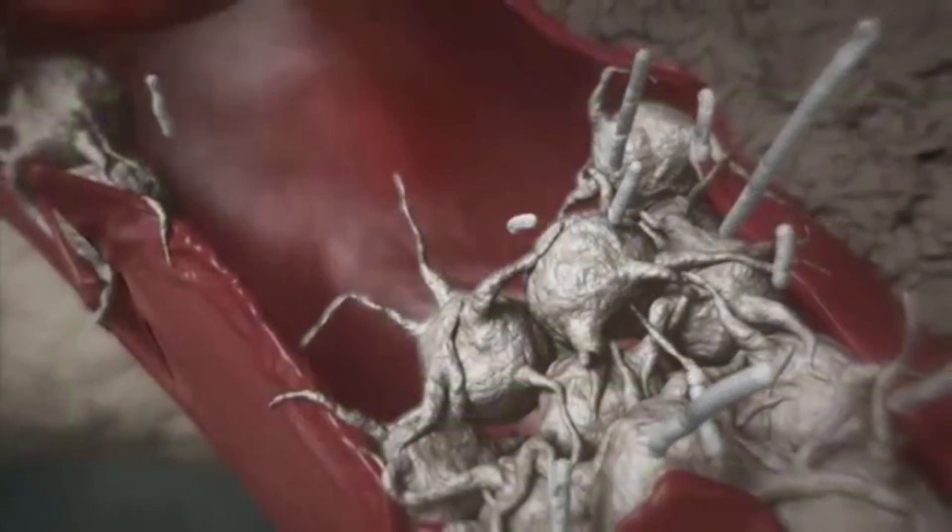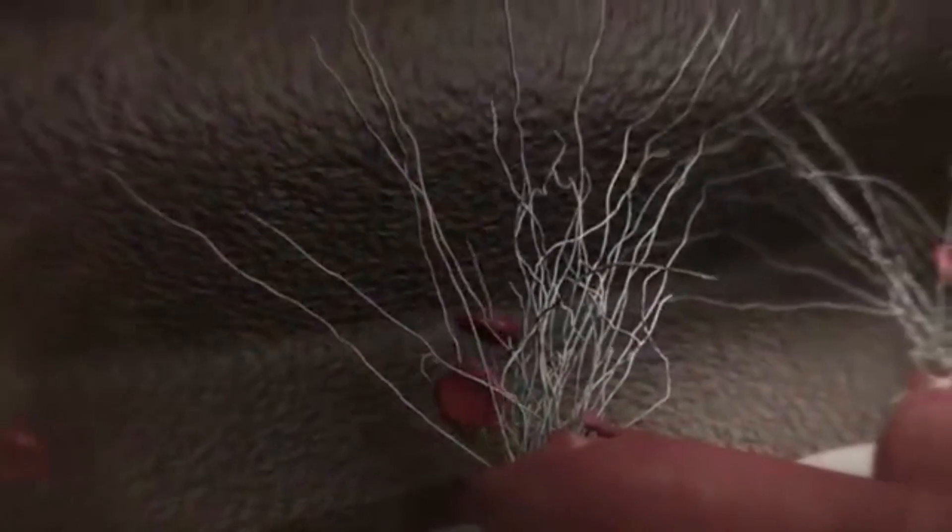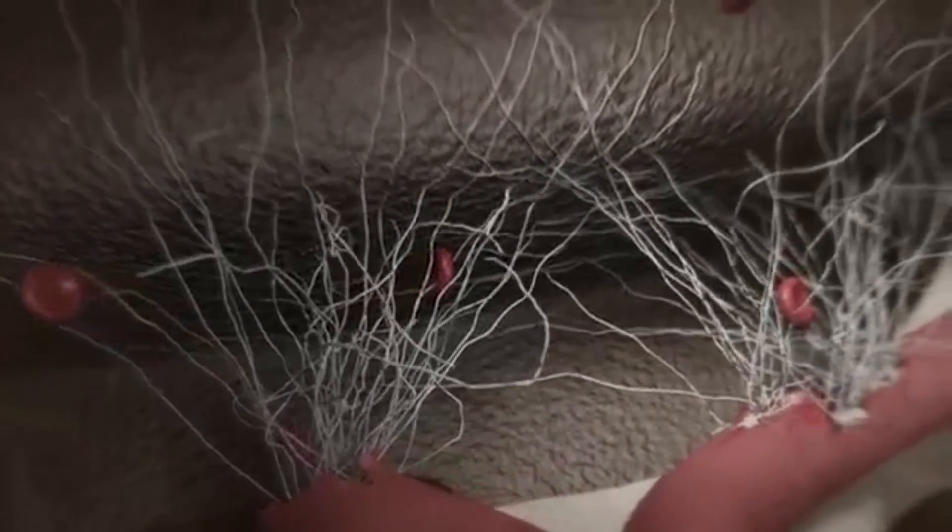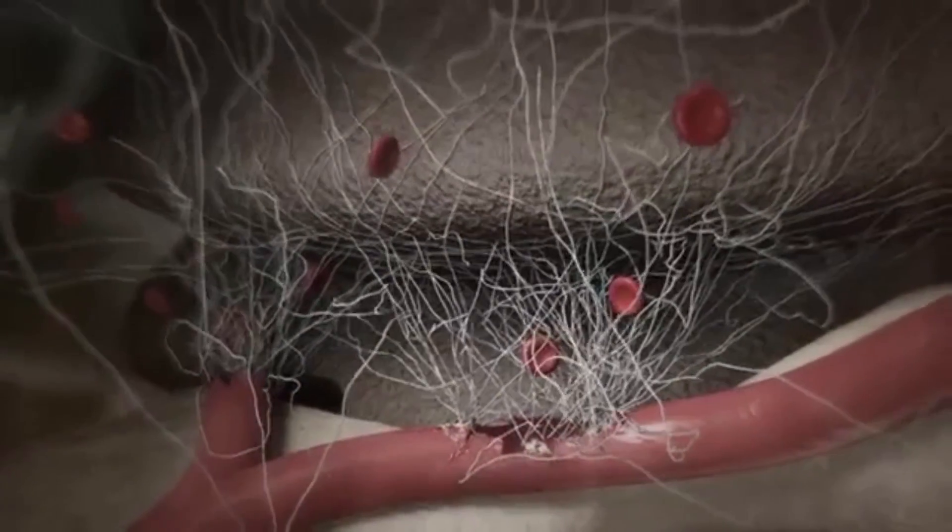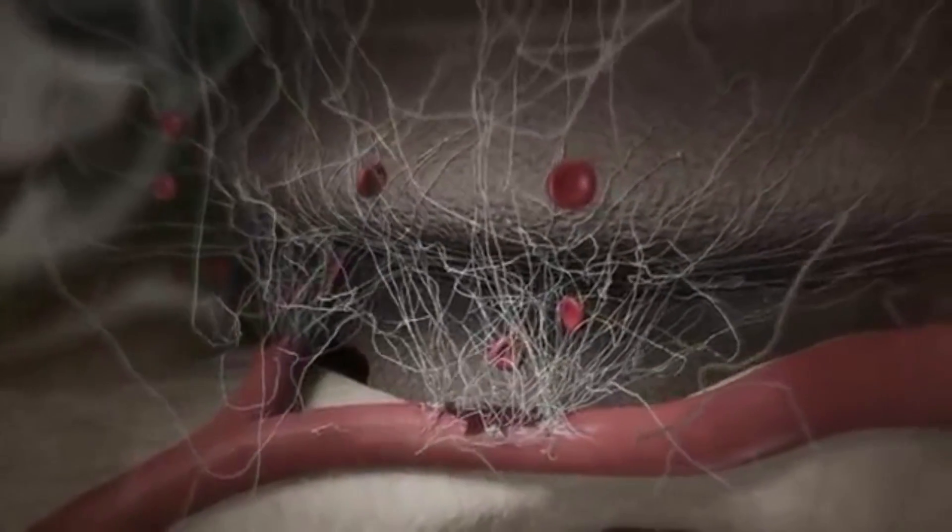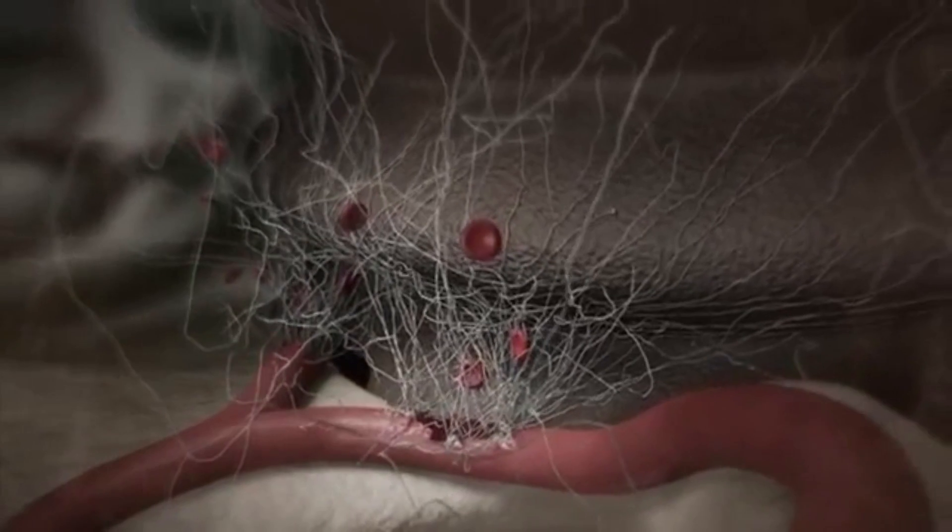Fibrin monomers spontaneously cross-link forming a fibrin network. The blood clot permeates the wound space, forming a provisional matrix. It also adheres to the implant surface. This blood clot has tremendous importance as a provisional matrix for subsequent bone healing processes on the implant surface.